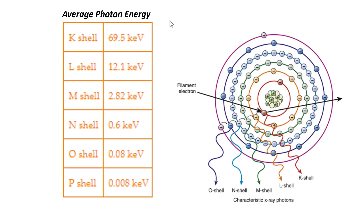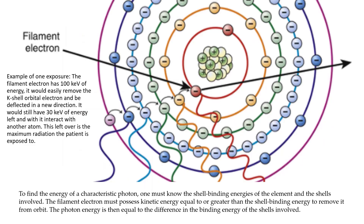The energy utilized in replacing the displaced electron is characteristic energy of that shell. Looking at the k shell, the average energy of the electrons is 69.5 keV. Where if we look at an outer shell like the p shell, the average energy of the electrons is 0.008 keV. To create exposures, we need to select an amount of radiation in milliamps, a kVp which is the highest photon energy that will be created, and a time that this radiation is being created. So we have mA, time, and kVp to create an exposure.